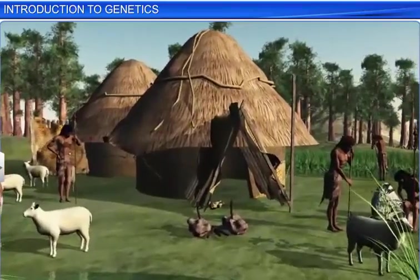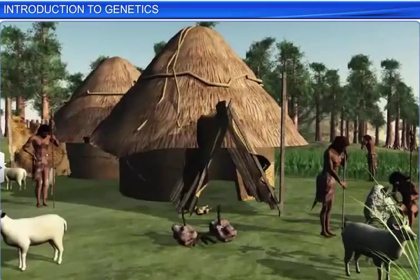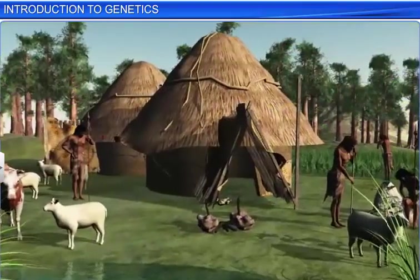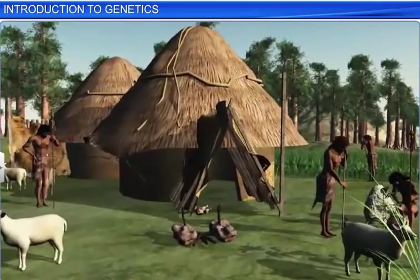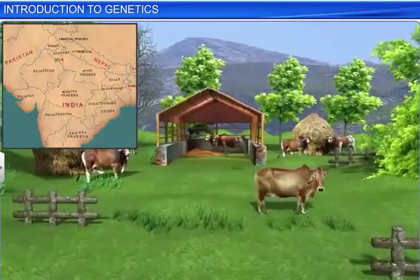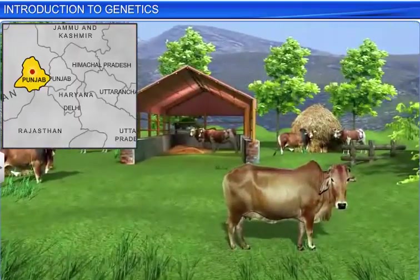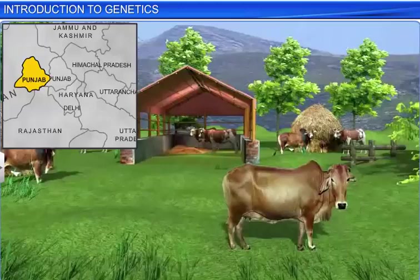Human beings have been using their knowledge of genetics since prehistoric times. Our ancestors knew that sexual reproduction was one of the causes of variation. Based on this principle, they practiced domestication and selective breeding of animals and plants. For example, the Sahiwal cow found in Punjab was obtained through artificial selection and the domestication of ancestral wild cows. However, our ancestors had very little knowledge about the scientific basis of genetics.